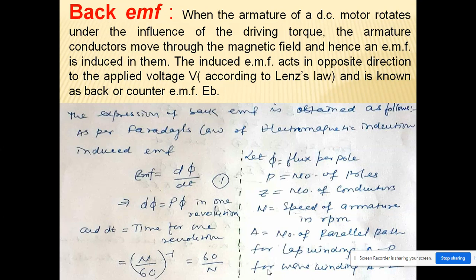Now we discuss back EMF. When the armature of a DC motor rotates under the driving torque, the armature conductors move through the magnetic field and an EMF is induced. According to Lenz's law, this induced EMF acts in the opposite direction to the applied voltage, which is why it is called back EMF or counter EMF, represented by Eb. To calculate the back EMF, we use Faraday's law of electromagnetic induction, where EMF equals the rate of change of flux.